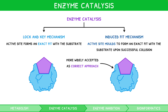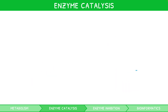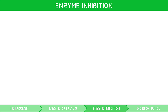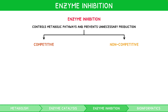For your IB Biology higher level exam, you must also understand how the interaction between enzymes and substrates can be inhibited, known as enzyme inhibition. This process is necessary to control metabolic pathways and prevent unnecessary production. It can occur in two ways: competitive and non-competitive inhibition.